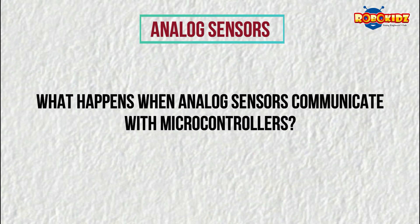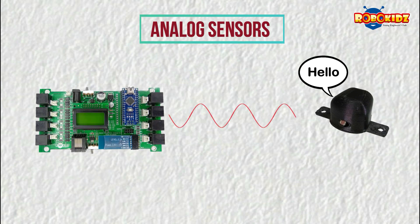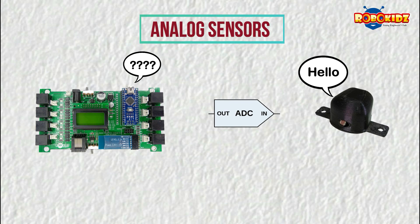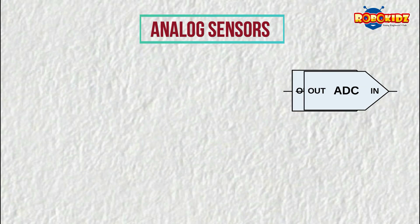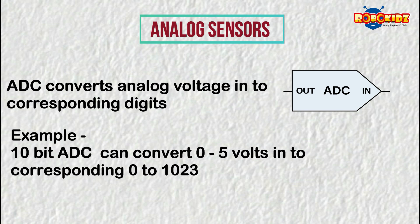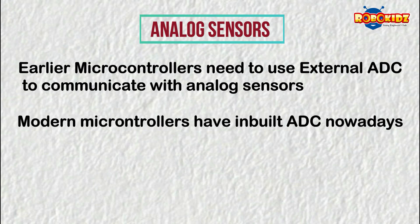Analog sensors convert the measured parameters into any voltage value in the range of 0V to 5V. When analog sensors send such values to the microcontroller, it cannot understand them because the microcontroller is a digital device. So we use an analog to digital converter (ADC). It converts the analog signals into corresponding digital signals so that the microcontroller can understand the sensor's input. A 10-bit ADC, for example, can convert voltage values from 0–5V to numbers from 0 to 1023. Earlier, microcontrollers needed an external ADC to communicate with analog sensors, but modern microcontrollers have inbuilt ADCs nowadays.